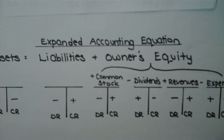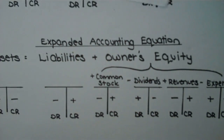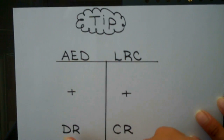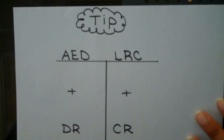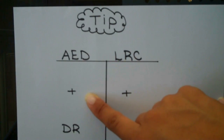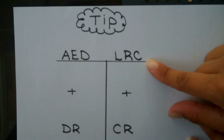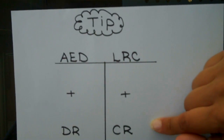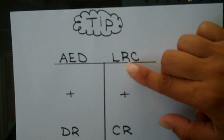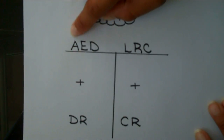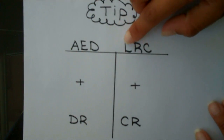A tip for those of you that like mnemonics: go ahead and draw a t-account with your left-hand and right-hand sides, or your debit and credit sides. Accounts that increase with a debit entry are assets, expenses, and dividends. Accounts that increase on the right-hand or credit side are liabilities, revenue, and common stock. A mnemonic to help you remember this is: after eating dinner, let's read comics.